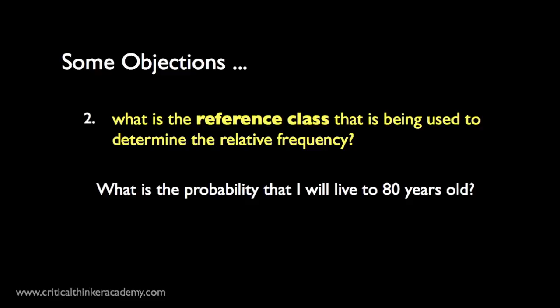Now, the problem for the frequency interpretation is that it doesn't seem to give a single answer to the question, what is the probability that I will live to 80? Instead, what it will give me is a set of answers relative to a particular reference class. My probability as a male, my probability as a non-smoker, my probability as a male non-smoker, and so on. To zero in on a probability specific to me, it seems like you need to define a reference class that is so specific that it may only apply to a single person, me. But then you don't have a relative frequency anymore. What you've got is a single case probability.